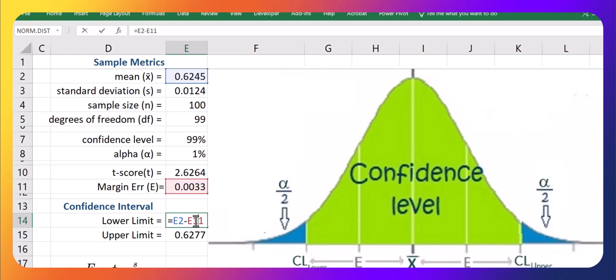Beautiful. So, again, take your sample mean minus your margin of error to get your lower bound. Take your sample mean and add your margin of error to get your upper bound.